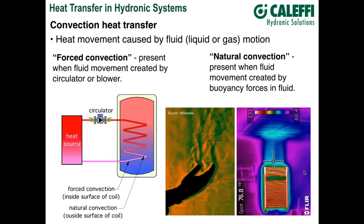Distinguishing between forced and natural convection: in general, forced convection is a much more aggressive form of heat transfer compared to natural convection. There are many situations in heating systems where both forms are present, but without question, forced convection allows you to do more with a smaller surface area compared to natural convection.